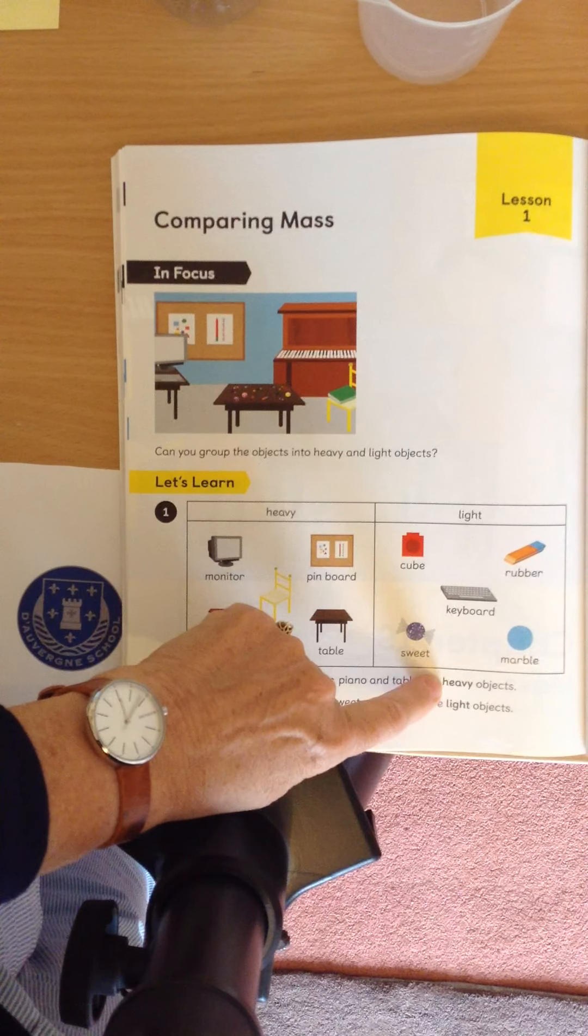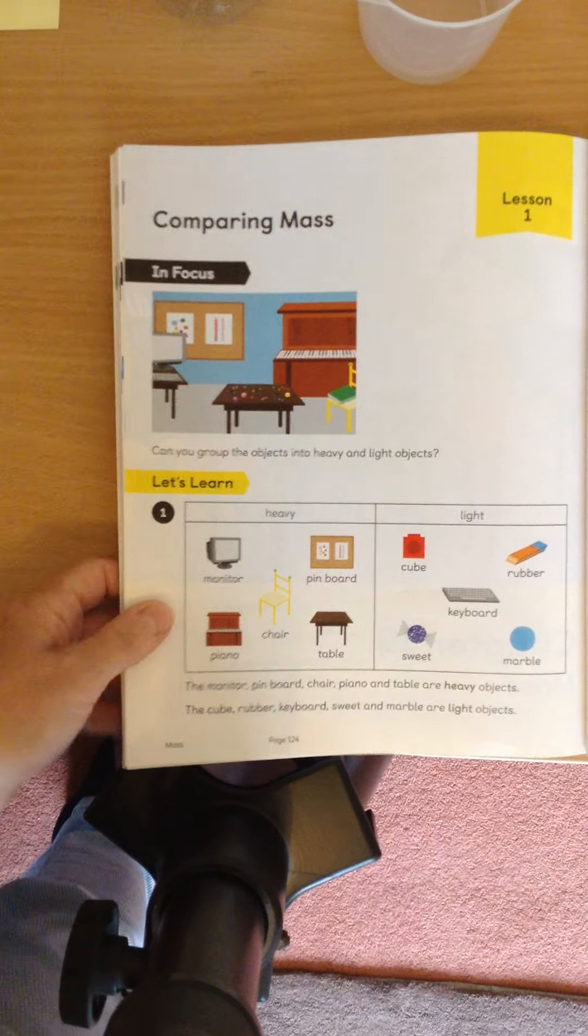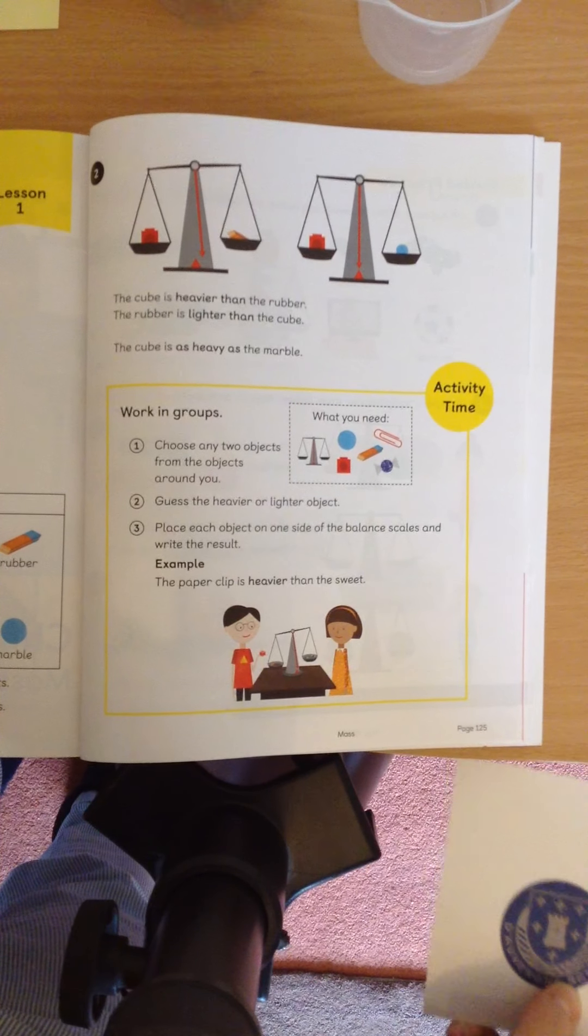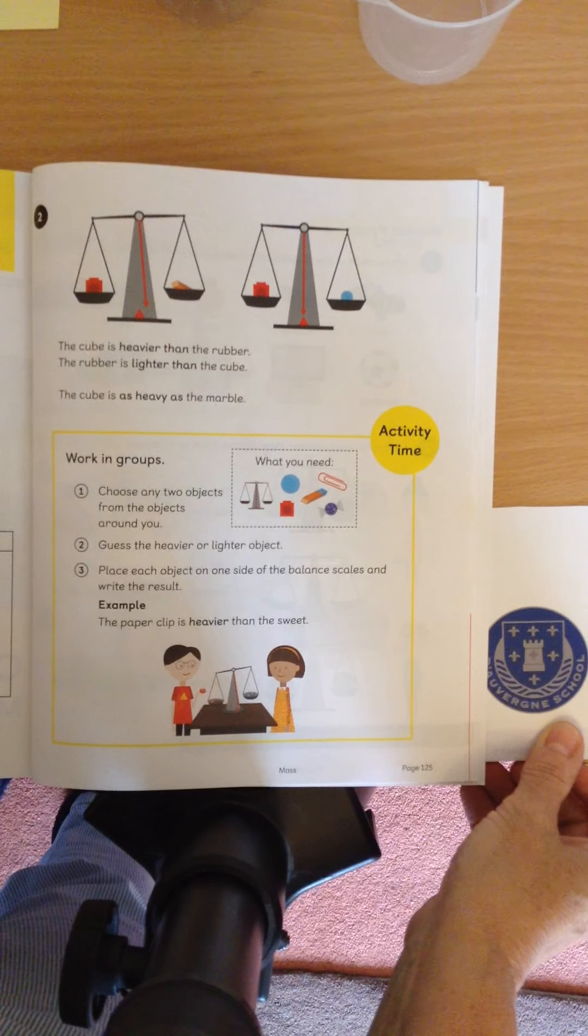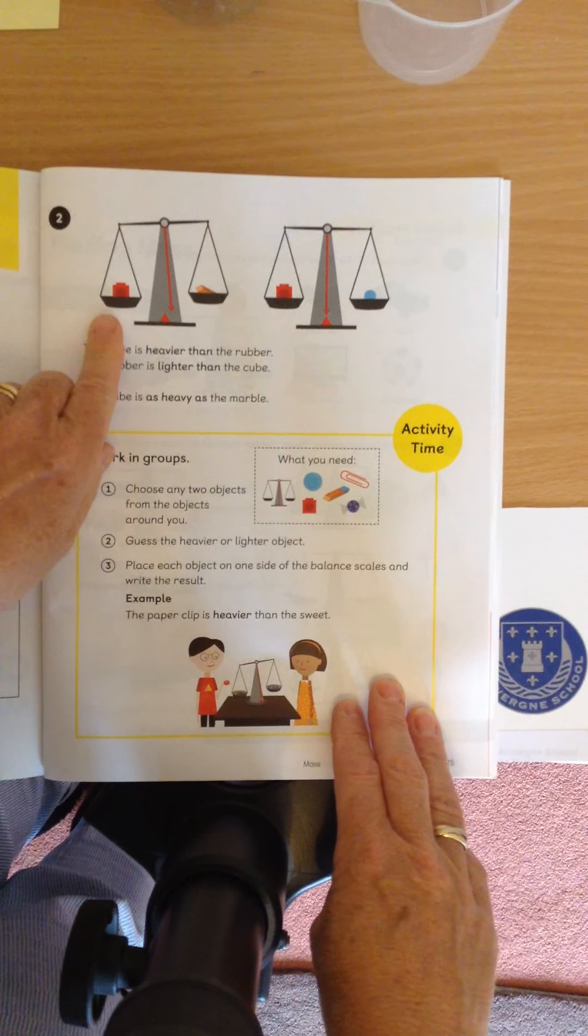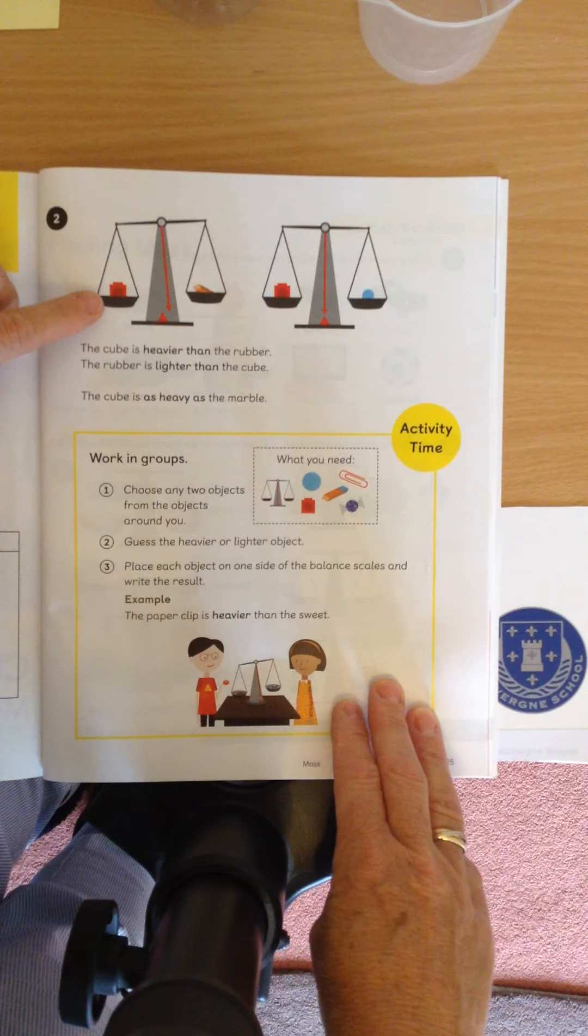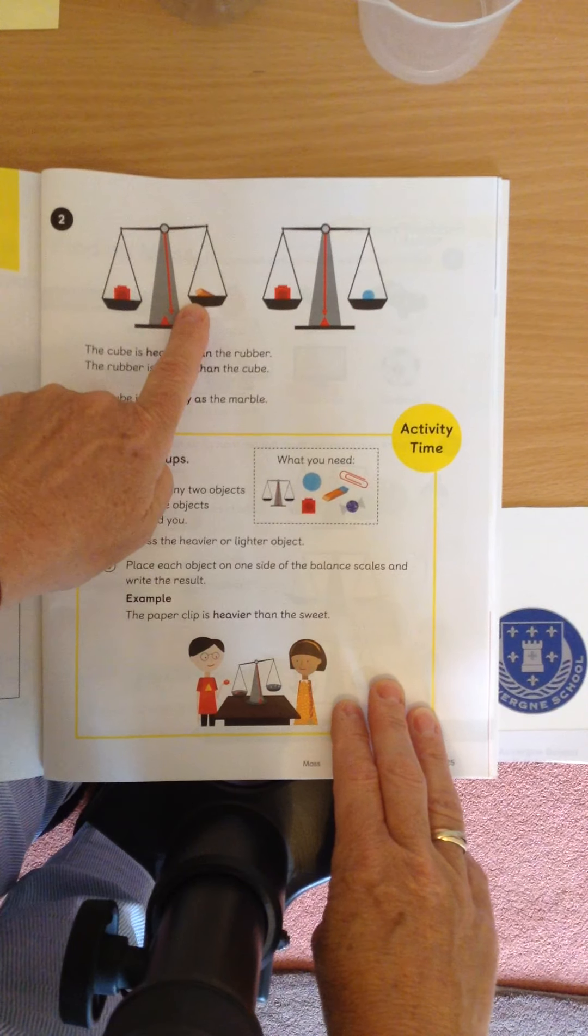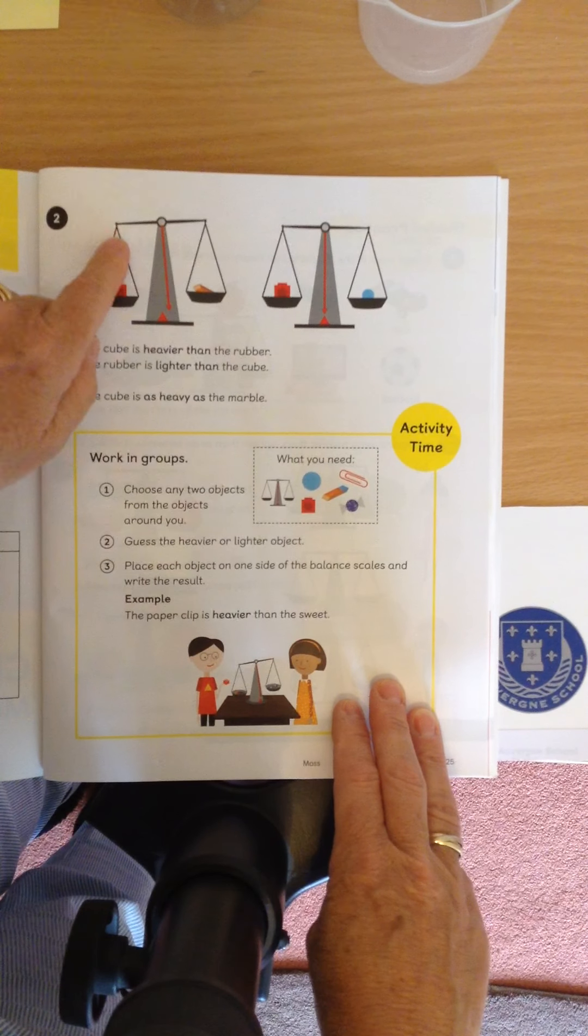Right, let's have a look on the next page, using our balance scales, see if we can see what it says there. It's got two pictures of scales, and we can see here, in our pan, we've got a little cube, and in there we've got a rubber. And if you look very carefully, if you look at this line here, it's not quite straight, because the cube is pulling the pan a little bit further down.